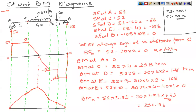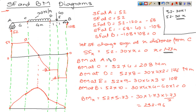BM at E is 52 into 9, minus 30 into 4 — with the UDL resolved at 3 meters from E — giving 108 newton-meters. BM at B is 52 into 10, minus 30 into 4 into 4, minus 40 into 1, which equals 0. So the bending moments are: A = 0, C = 208, D = 176, E = 108, B = 0.